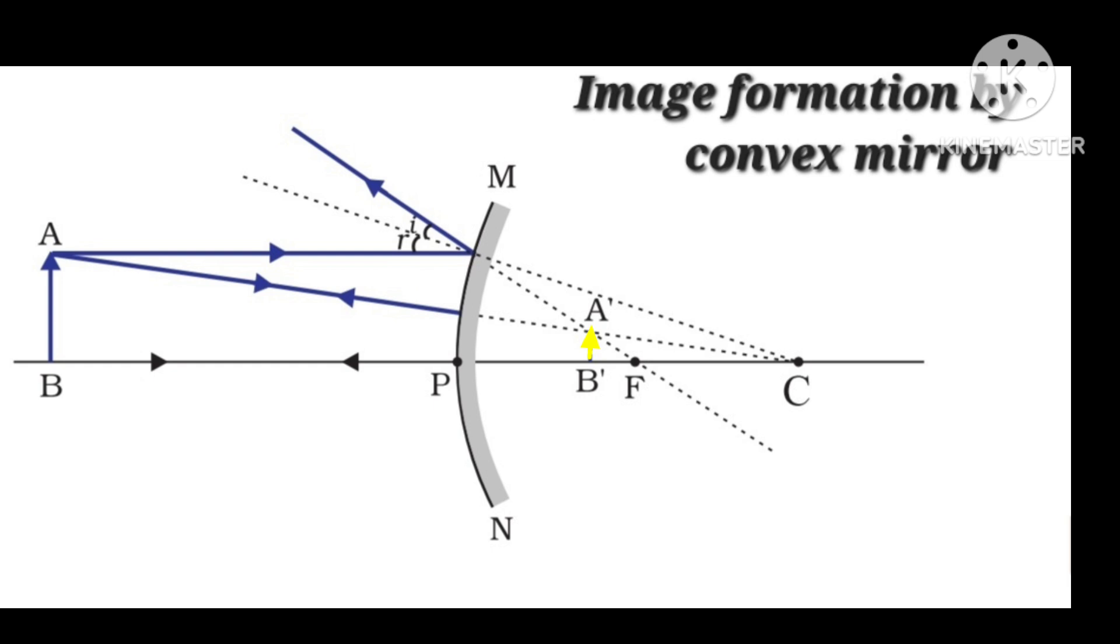That is the image of point A. So when the object is between infinity and the pole, the image is formed between the pole and focus, behind the mirror.